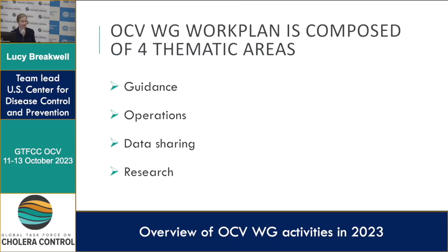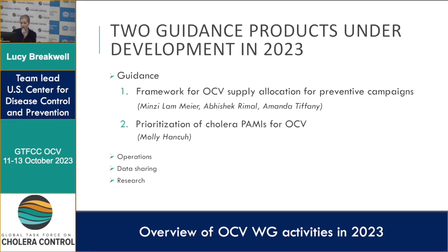For those who have been at the meetings before, you may remember that the OCB working group work plan is composed of four thematic areas, which covers guidance, operations, data sharing, and research. I'm going to touch on the main pieces that we've been doing, and for the ones that are being presented, I'll just name them. There are also a few other things I wanted to talk to you about.